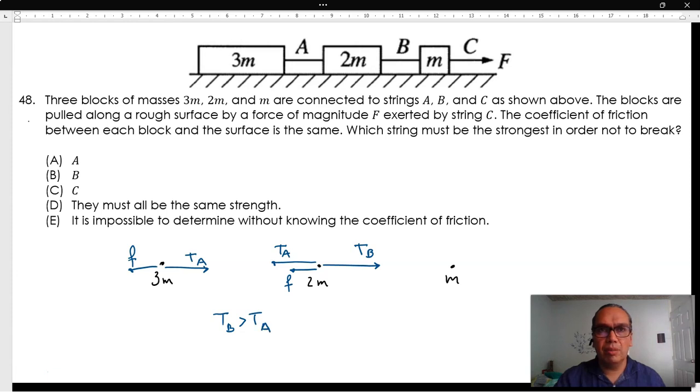The third block has a force F, which is tension C, to the right, friction to the left, and tension B to the left, which makes it the largest.